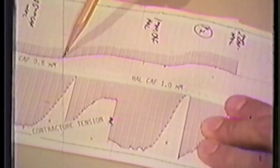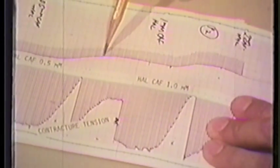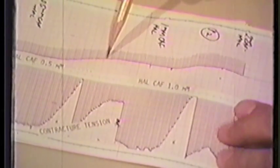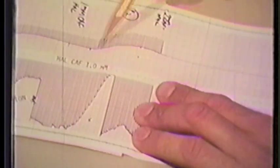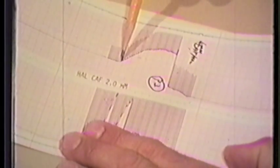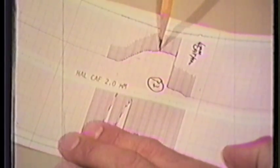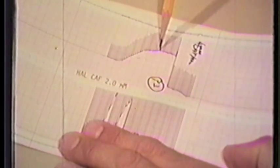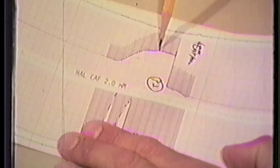Here at 0.5 millimolar caffeine, the baseline is increasing. As we increase the concentration of caffeine, there is an increase in contracture tension. Here at 2 millimolar caffeine, there is a marked increase in the baseline, indicating an increase in contracture tension.